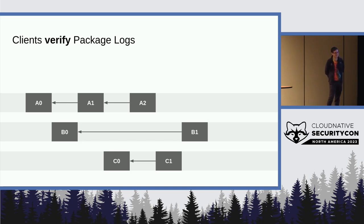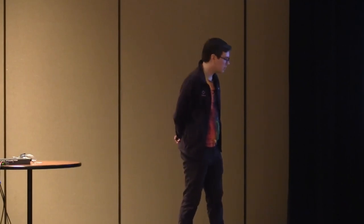So the way we currently envisage monitors working is that monitors are going to subscribe to a stream of registry data from the registries that they monitor, and they're going to process it. And then clients actually, like the actual API client, you'll set, you'll pick your registry that you're using, and you'll actually pick a list of monitors that you trust.